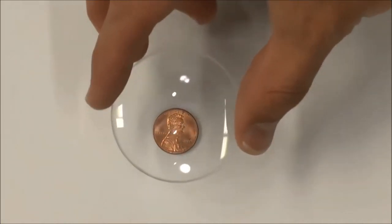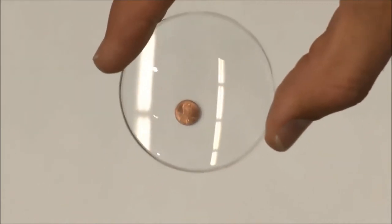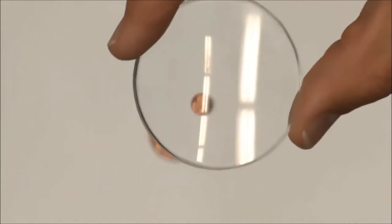But a concave lens has a magnification of less than one, causing objects to always look smaller.